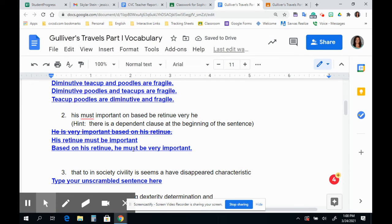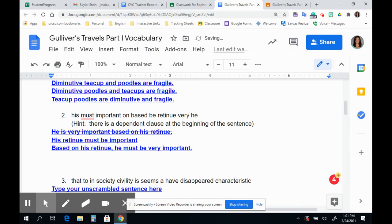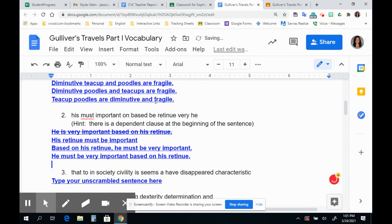So based on his retinue, he must be very important. That sentence makes sense. It also makes sense because we put based on his retinue. Now, I had other classes that did this today say, and flip it, he must be very important. And I spelled important wrong, sorry about that. Based on his retinue. Absolutely, that also makes sense and you could use that as well. So notice how I worked through these sentences to try and make them make sense.